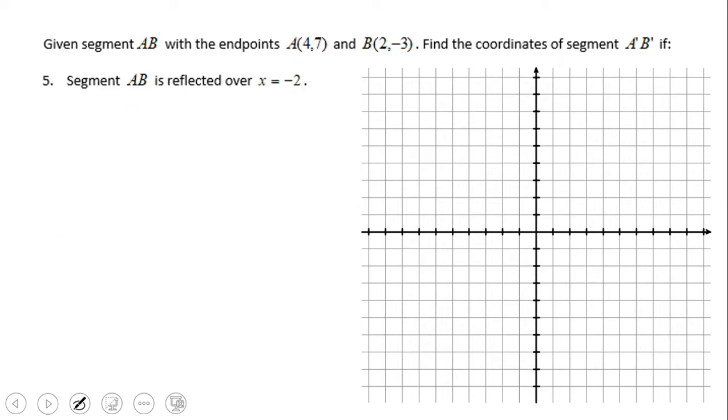Let's take a look at the next example. This one is asking us to reflect the same segment AB, but now over x equals negative two. X equals negative two is a vertical line, negative two obviously here. That means three units to the left. And let's start with (4, 7).